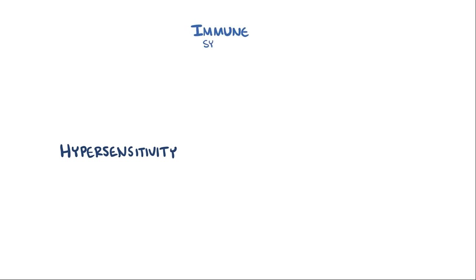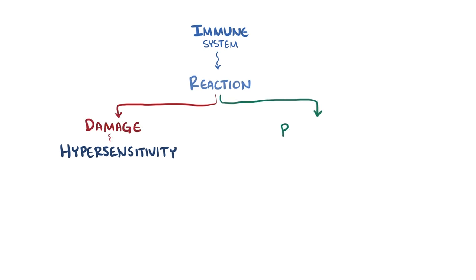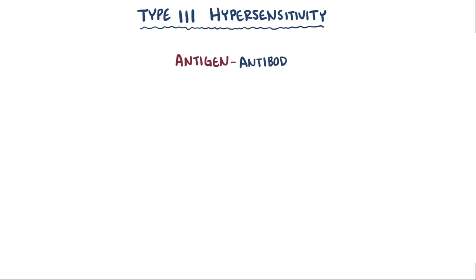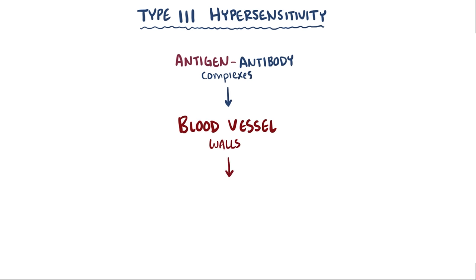Having a hypersensitivity means that someone's immune system has reacted to something in a way that ends up damaging them, as opposed to protecting them. There are four different hypersensitivities, and the third type, or type 3 hypersensitivity reaction, happens when antigen-antibody complexes deposit in blood vessel walls, causing inflammation and tissue damage.